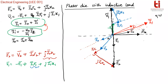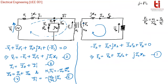This is the phasor diagram of a single phase non-ideal transformer with an inductive load. This diagram is based on the equations on the left, which are based on the circuit diagram, and the circuit diagram is based on the behavior of a non-ideal transformer.